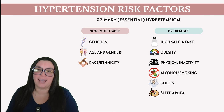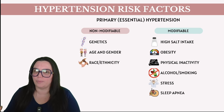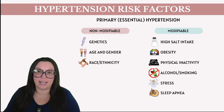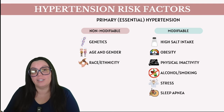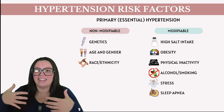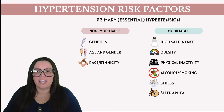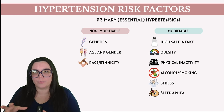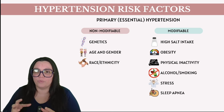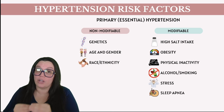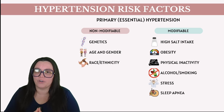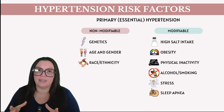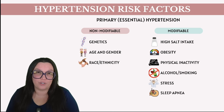Now for modifiable risk factors — things we can change. We start with high salt/sodium intake. Excessive salt in our diets causes the body to retain more fluid, since fluid follows salt. To maintain electrolyte concentration, the body increases fluid retention, resulting in high blood pressure and additional strain on our heart and blood vessels. That's why we see DASH diets that limit salt intake — we really want patients to be aware that salt needs to be eliminated as much as possible, especially in those individuals who are more salt-sensitive.